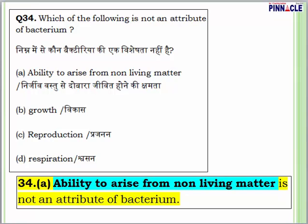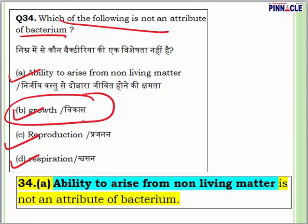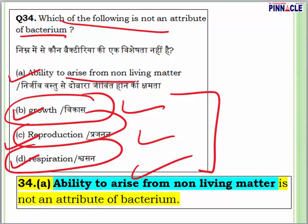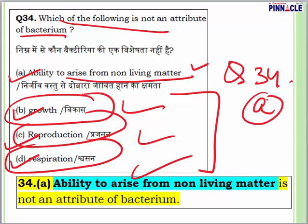Question 34: Which of the following is not an attribute of a bacterium? Options are ability to arise from non-living matter, growth, reproduction or respiration. Bacteria definitely grows, reproduces and respires. But bacteria does not have the ability to arise from non-living matter. So answer is A.